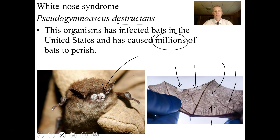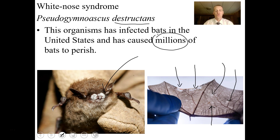This is serious. Bats are really important for eating insects and keeping insect populations down. Whole bat colonies are being destroyed by this organism. Hopefully we'll find some way to vaccinate bats or develop an anti-fungal cure, or perhaps natural selection will create natural resistance in our native bats. When you lose all the bats, you're going to have a lot more insects.